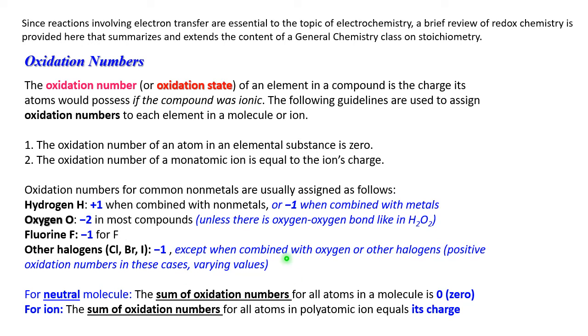All other oxidation numbers are just calculated using simple rules. For neutral molecules, the sum of all oxidation numbers for all atoms in a molecule is zero. For ions, the sum of all oxidation numbers for all atoms in an ion equals the charge of this ion.